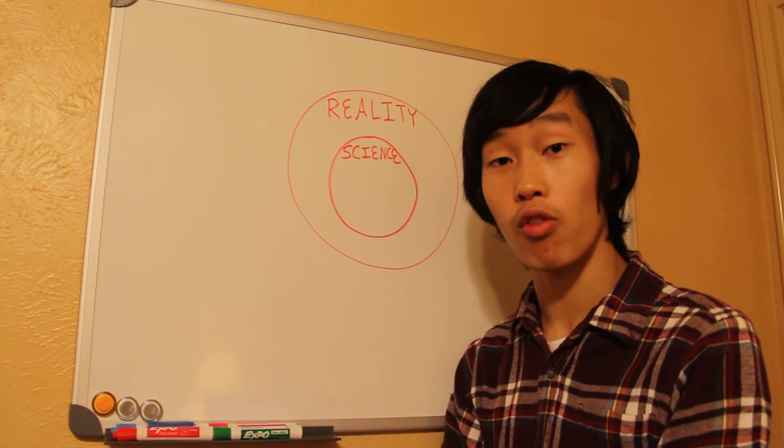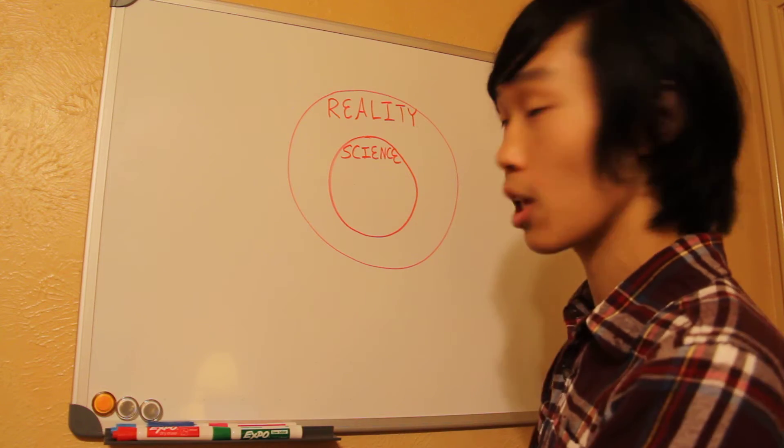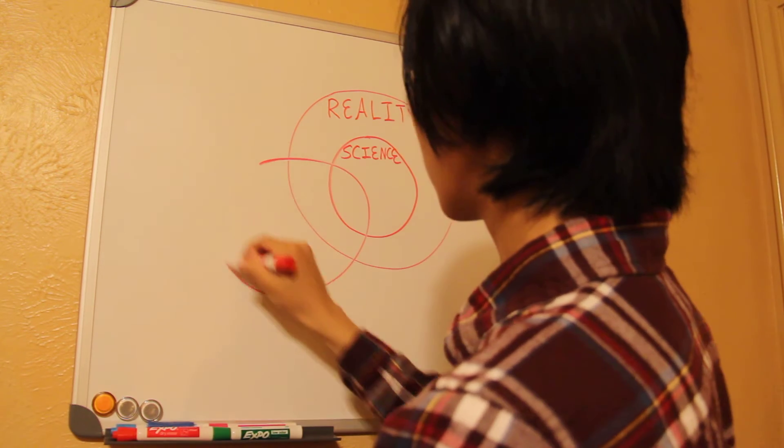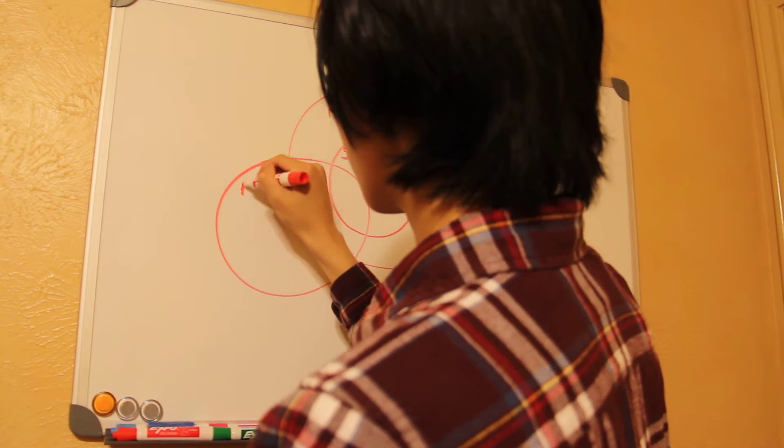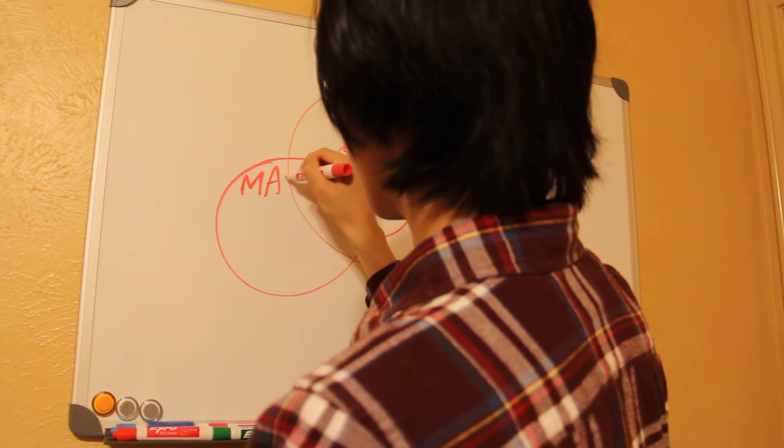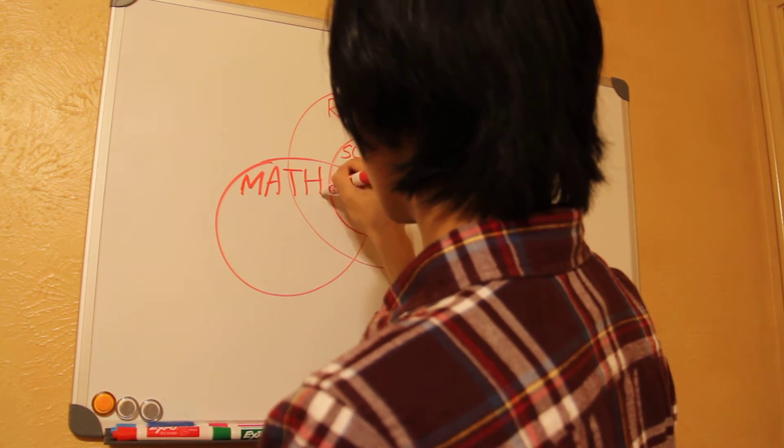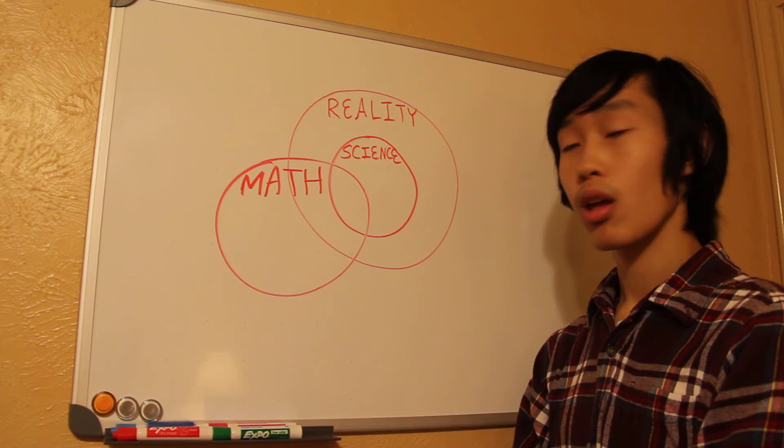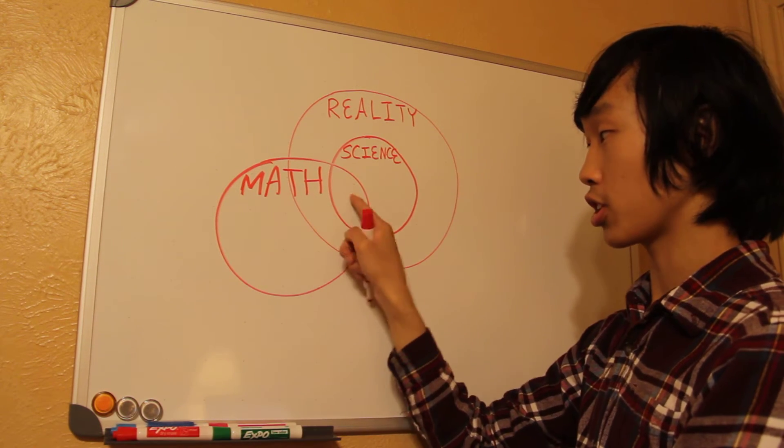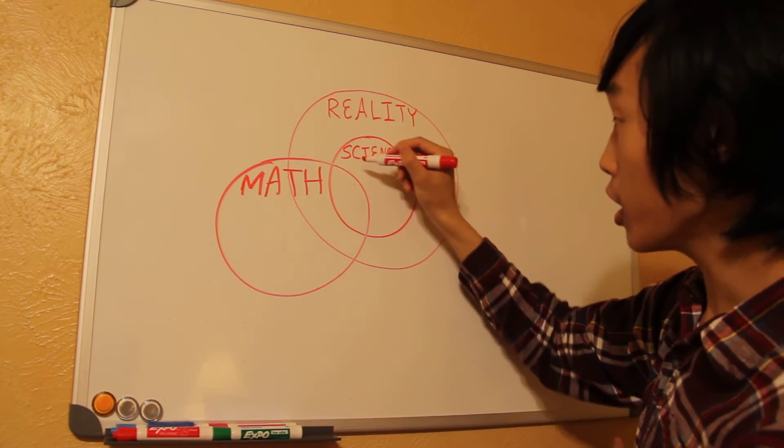And for reference, let me draw the circle of math. Mathematics. I'll just label it math. And you can see how it has three sections here.